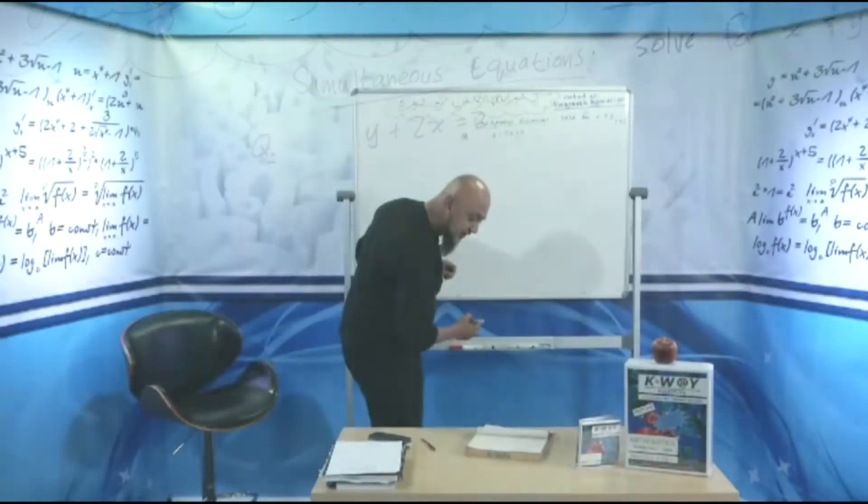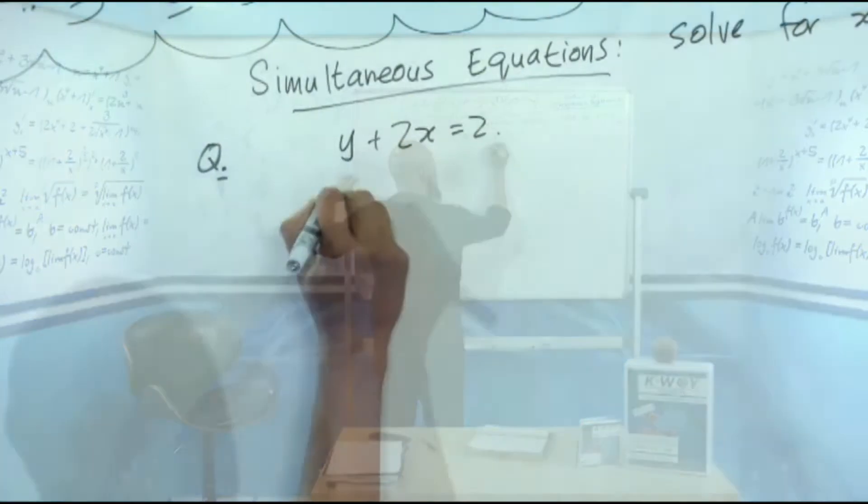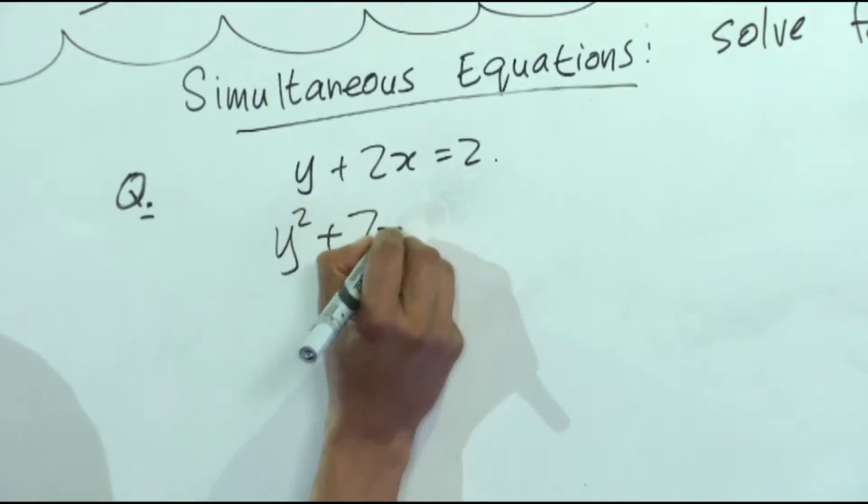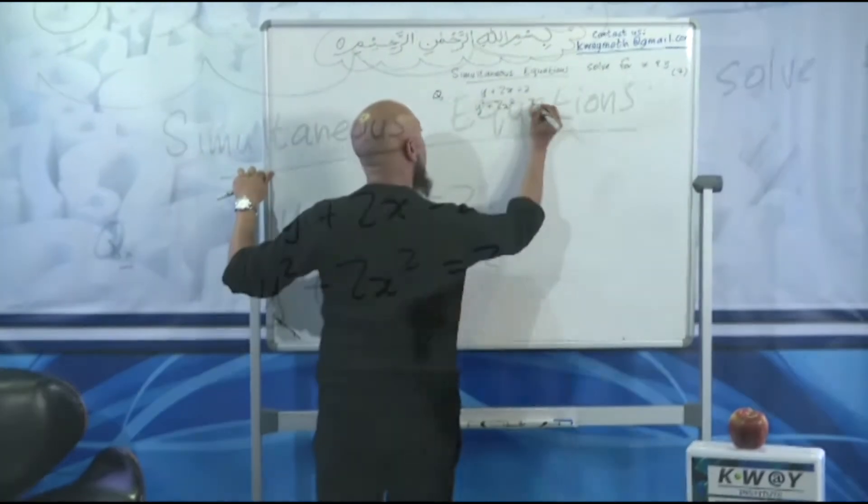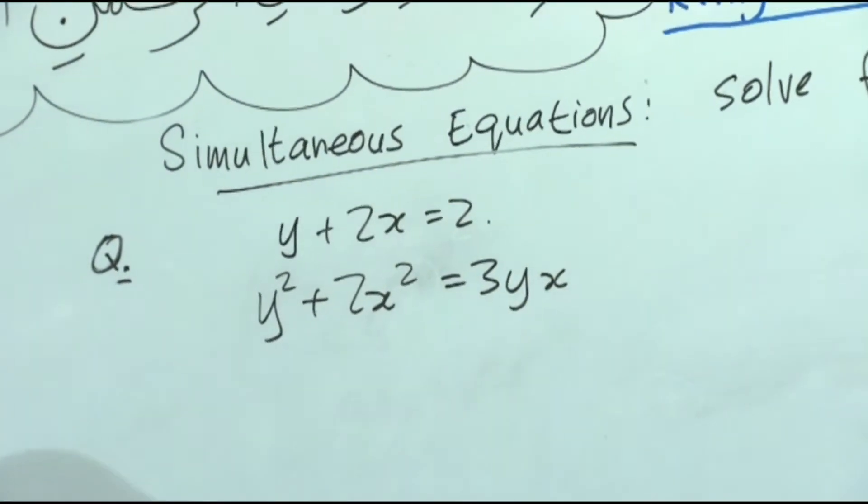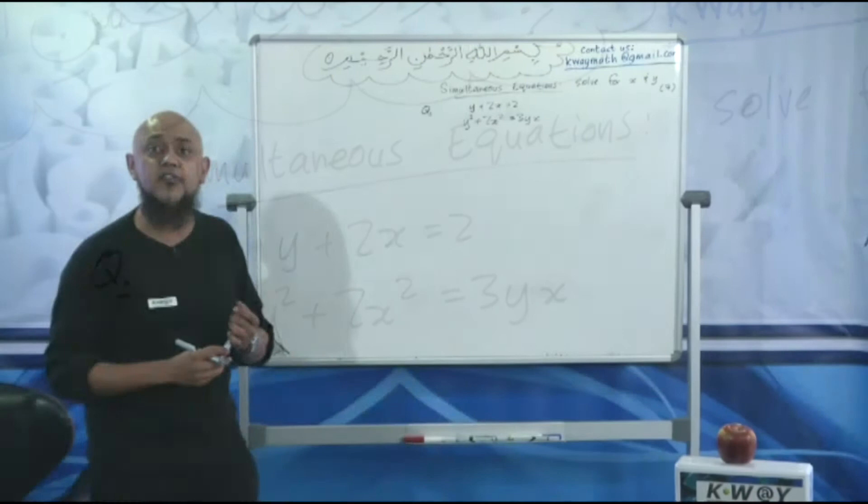And your next equation is y squared plus 2x squared is equal to 3yx. Also worth 7 to 8 marks. Solve for x and y.